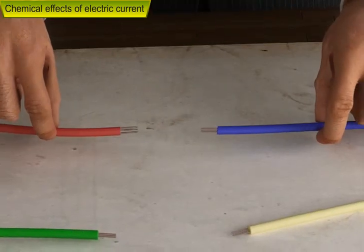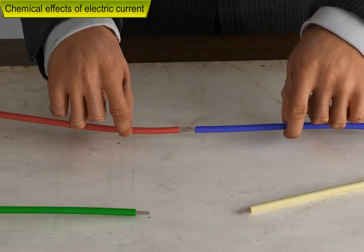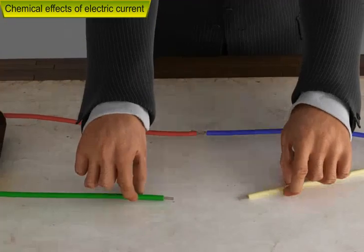Now, attach the other ends of the wires to the bulb. We can see the bulb glowing. This indicates that the tester is working.